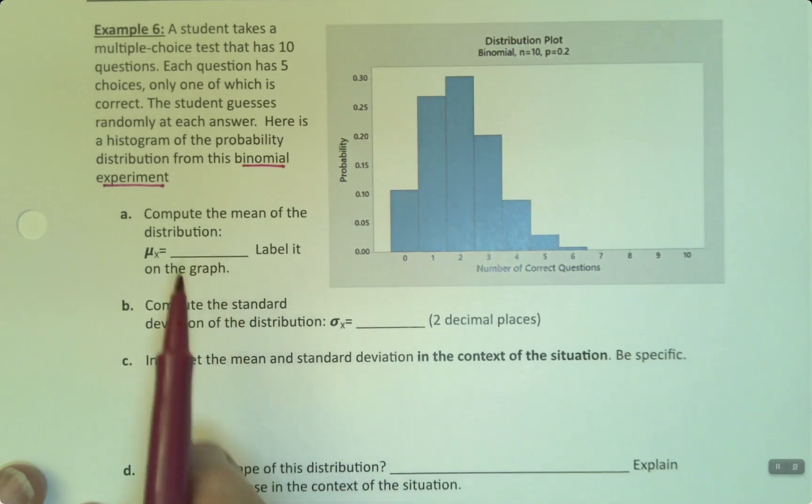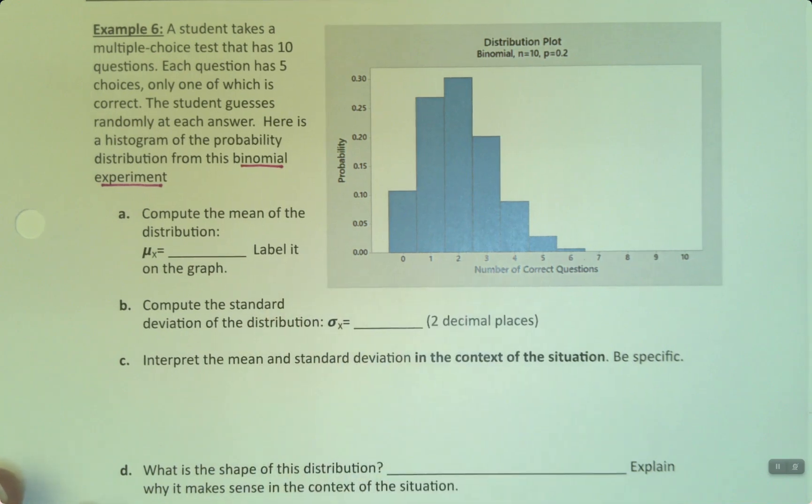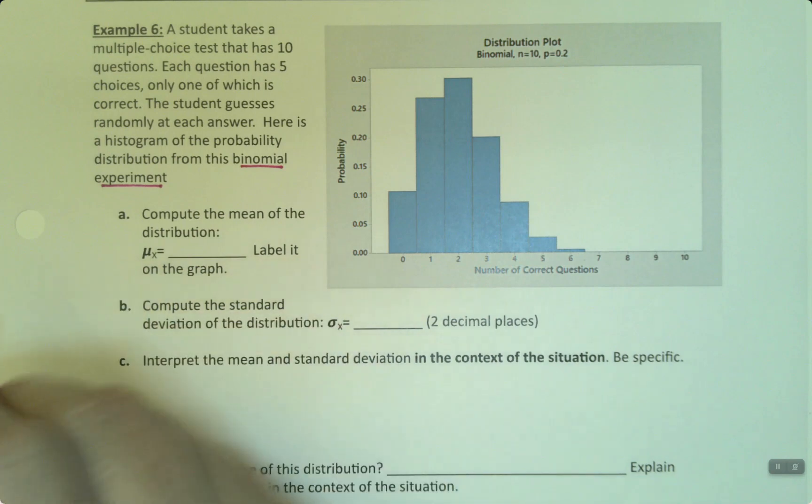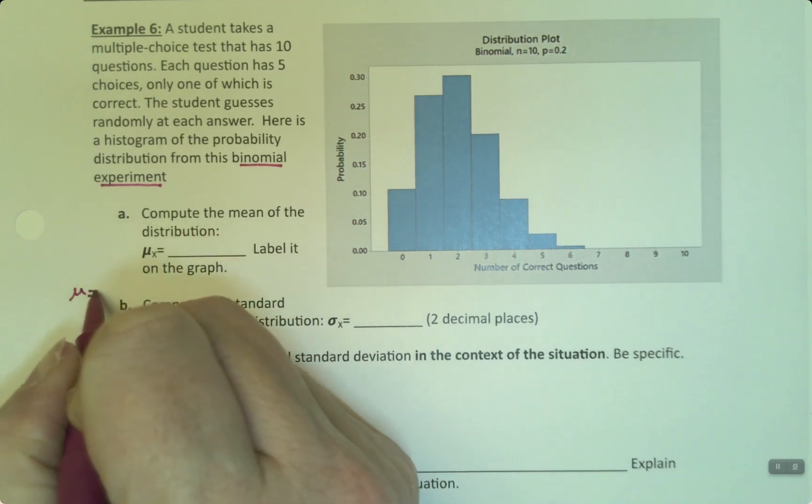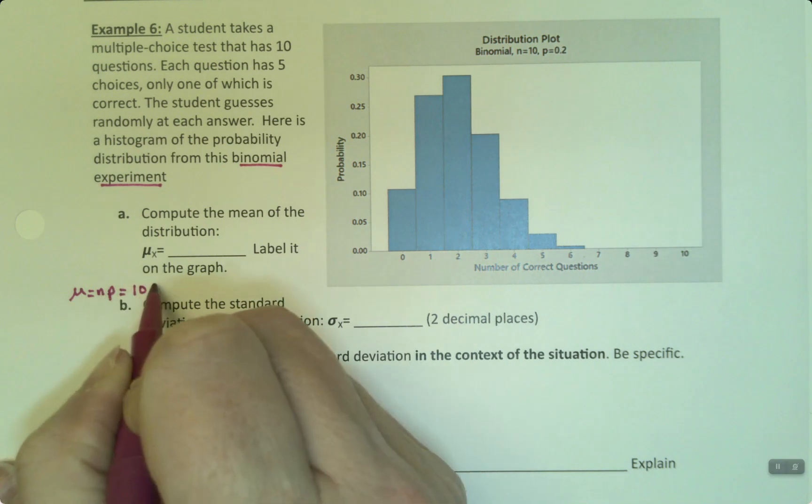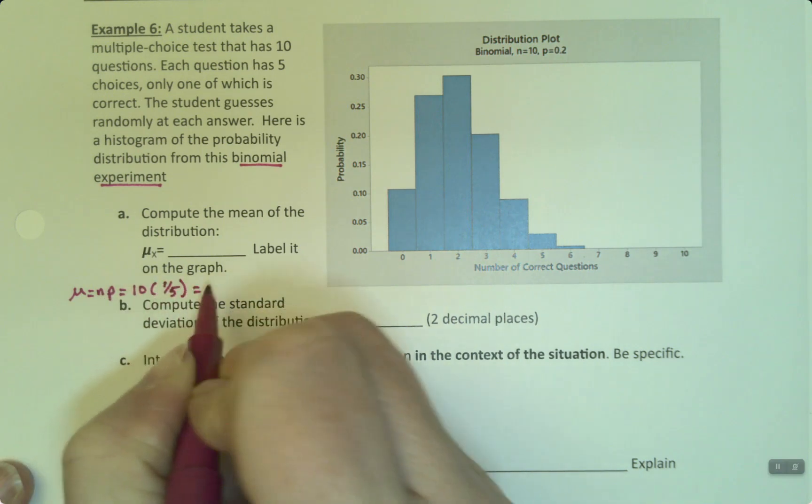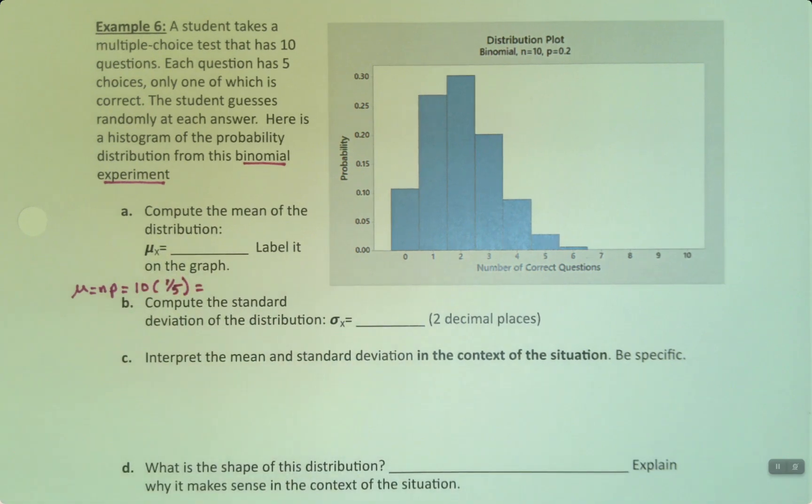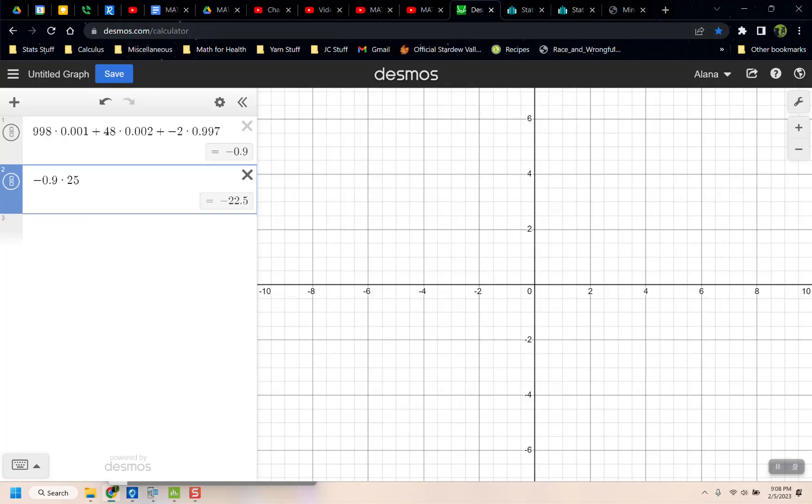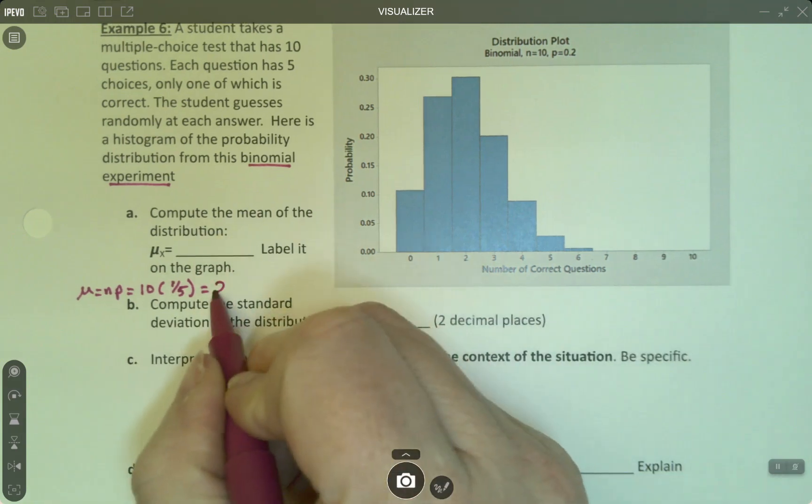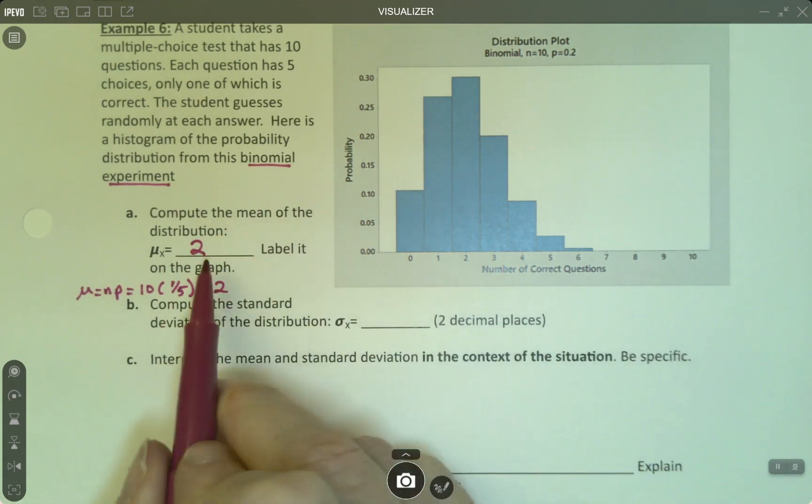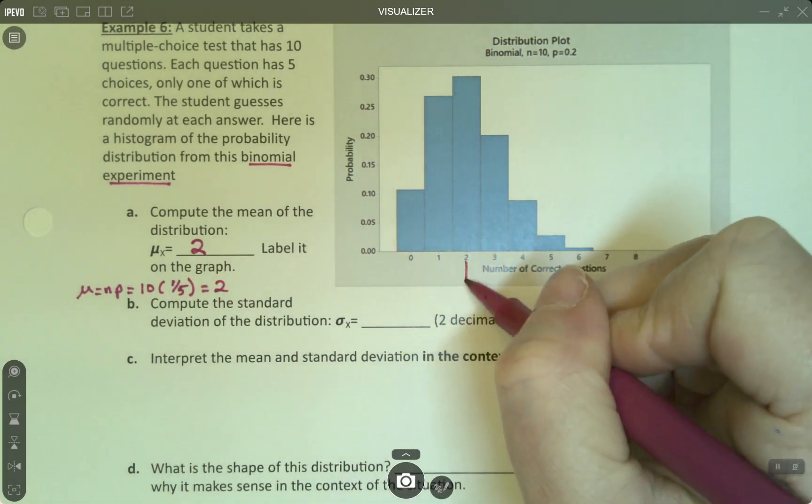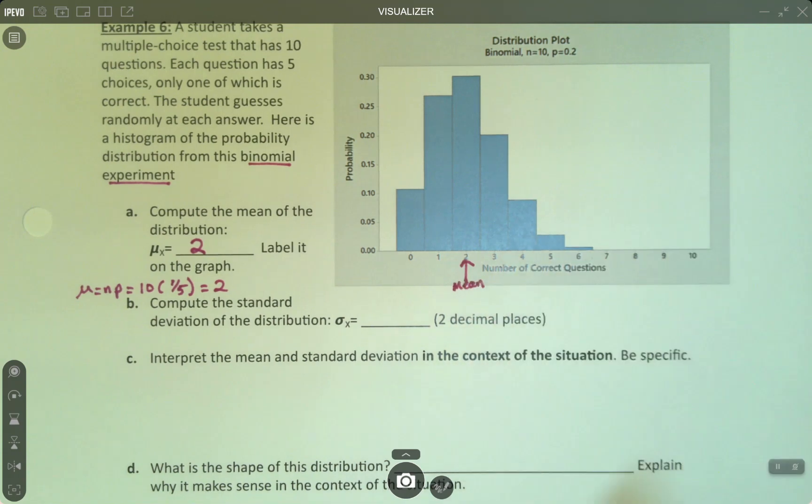We're going to compute the mean and label it on the graph. And we're going to compute the standard deviation and label it as well. Maybe I should have given some space for this. The mean is Np, N times p. So N was 10, P is 1/5 or 0.2. So if we take 10 and we multiply it by 1/5, 10 times 1/5 makes 2. So that's 2, it would be two questions correct. We're going to label it on the graph. So right here is the mean, which was 2.